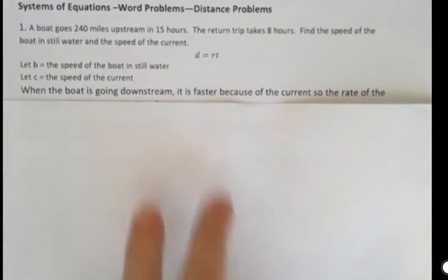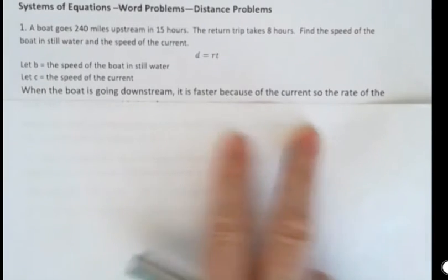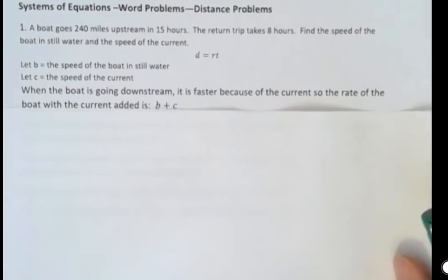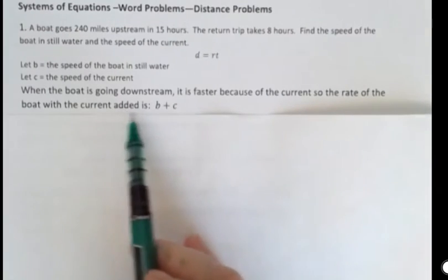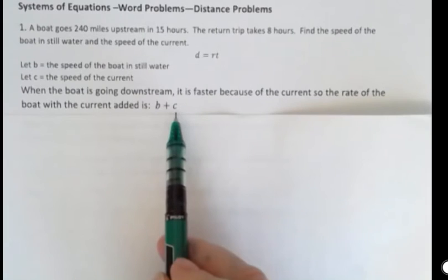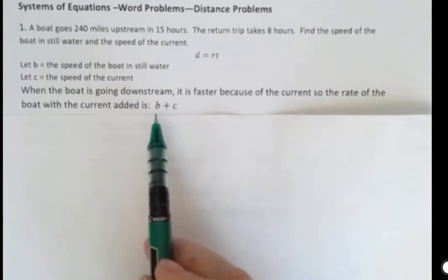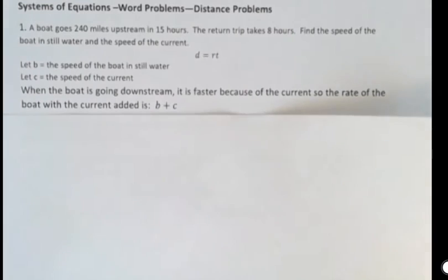When the boat is going downstream, it's faster because of the current. So if we want to talk about the rate of the boat as it travels downstream, it's the boat and the current added together. So the speed of the boat plus that current is pushing it when it's going downstream. So we get b plus c. That's going to be the rate of the boat.